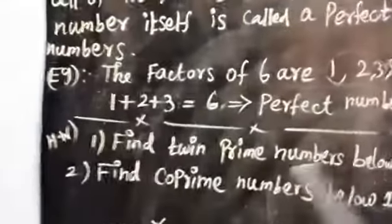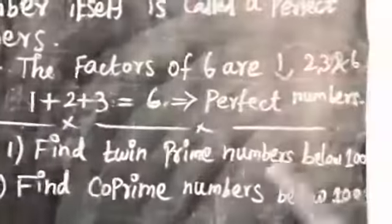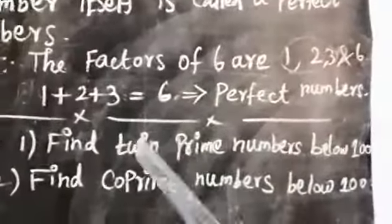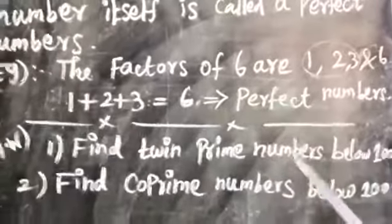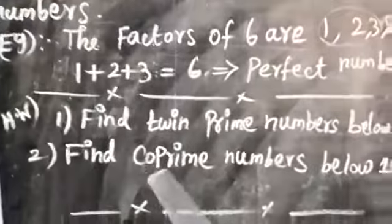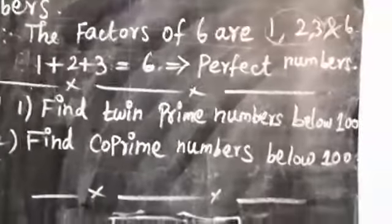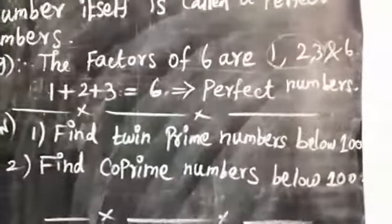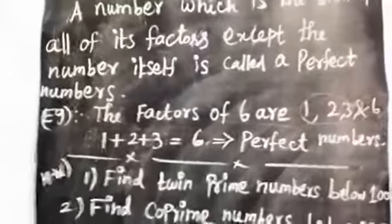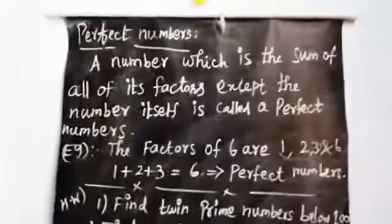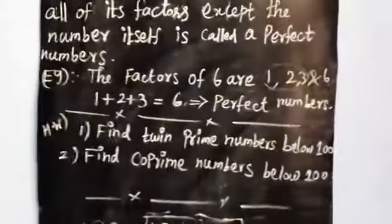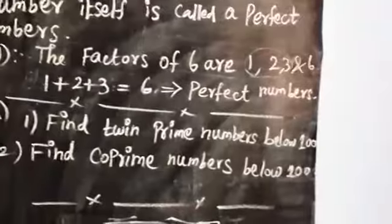Dear children, for homework: find twin prime numbers below 100 — write the prime numbers and identify the twin prime numbers. Second, find co-prime numbers below 100. Also write co-prime numbers, twin prime numbers, and perfect numbers in your math note. Do these two sums in your homework note as well. Thank you.